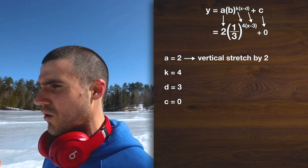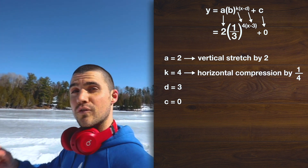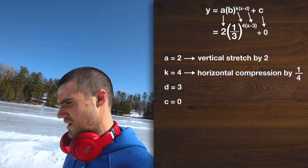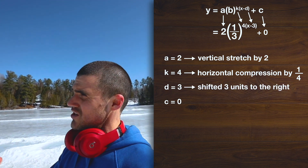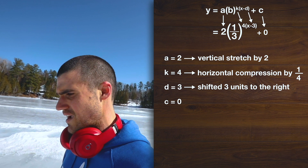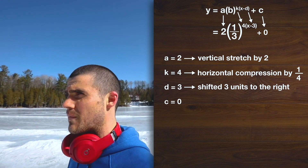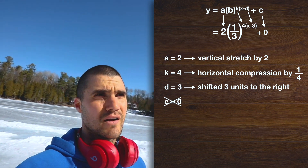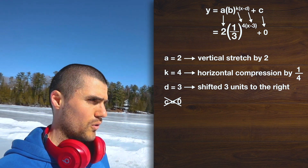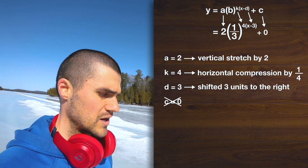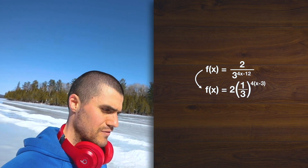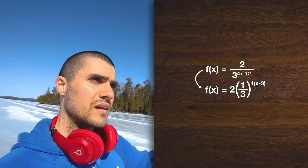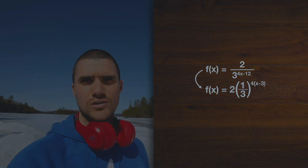The k value of 4 means that there's a horizontal compression by 1 over 4 — remember, you've got to flip the k value. The d value of positive 3 means that the function has been shifted 3 units to the right. And a c value of 0 — we don't even have to mention anything about that; basically there is no vertical translation up or down. And that's pretty much it. So with the function we're given, we first had to convert it to have that base function 1 over 3 to the power of x, get the transformation values, and then state the transformations.